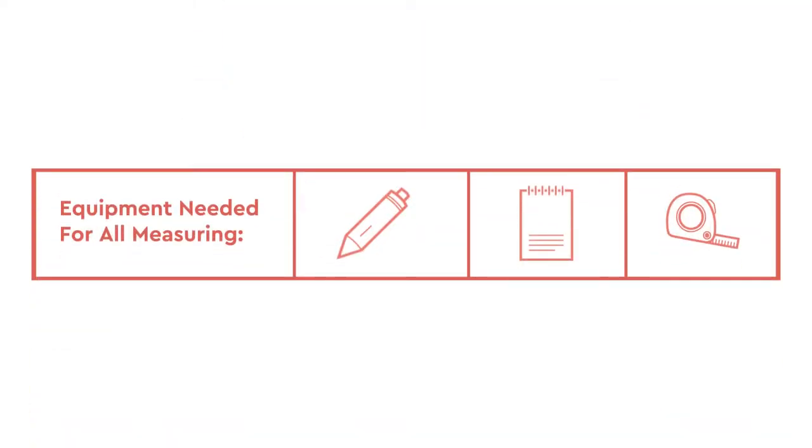Whilst measuring for your own balustrade may seem like a challenging task, all you need is a pen, a piece of paper and a measuring tape, and follow these five simple steps.